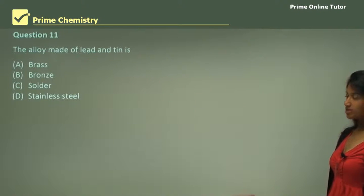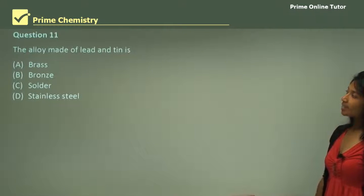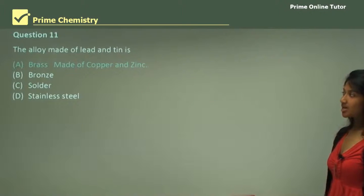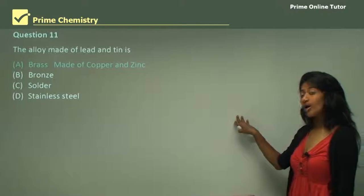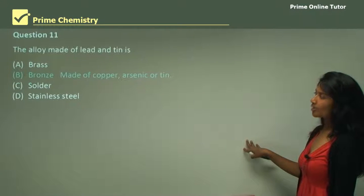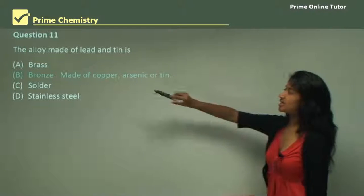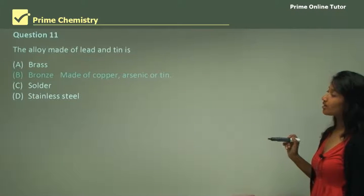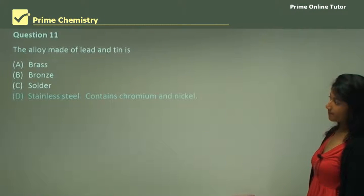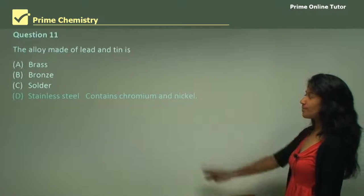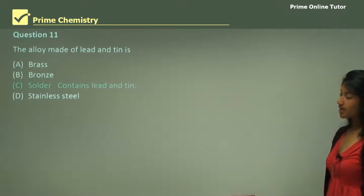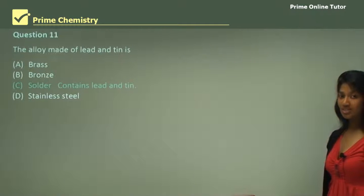Question 11: the alloy made of lead and tin. Option A, brass, is made up of copper and zinc, so it's not the answer. Option B, bronze, is made of copper and arsenic or tin, so it is not made of lead and tin. Option D, stainless steel, contains chromium and nickel, so it's not the answer. Option C, solder, contains lead and tin — therefore solder is the answer.